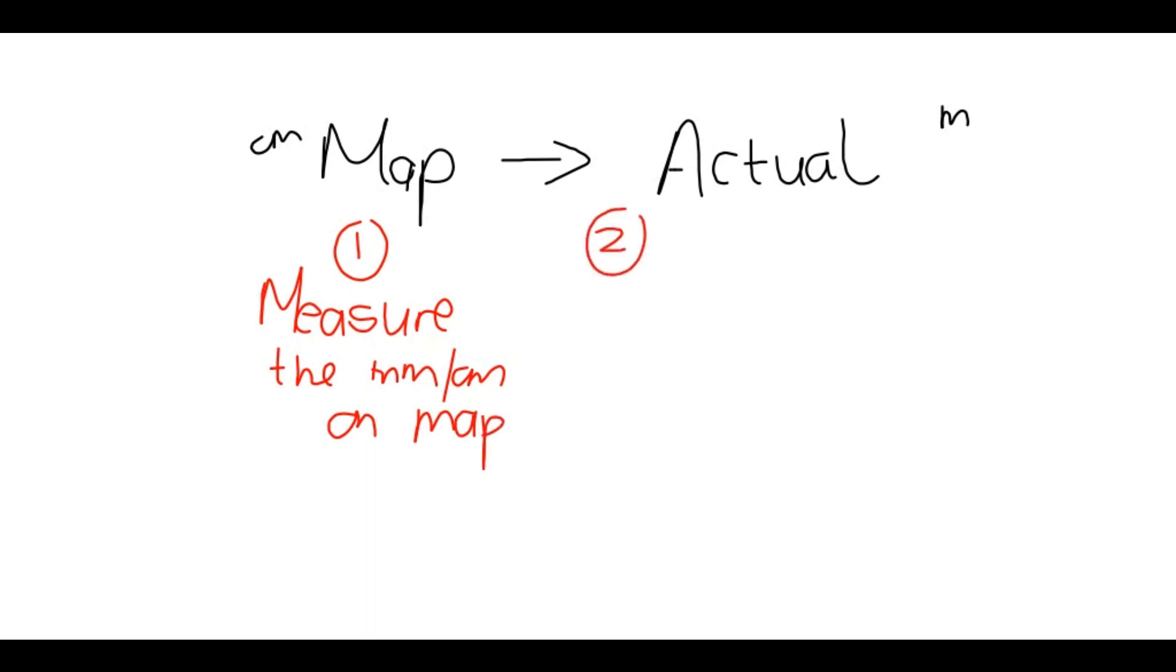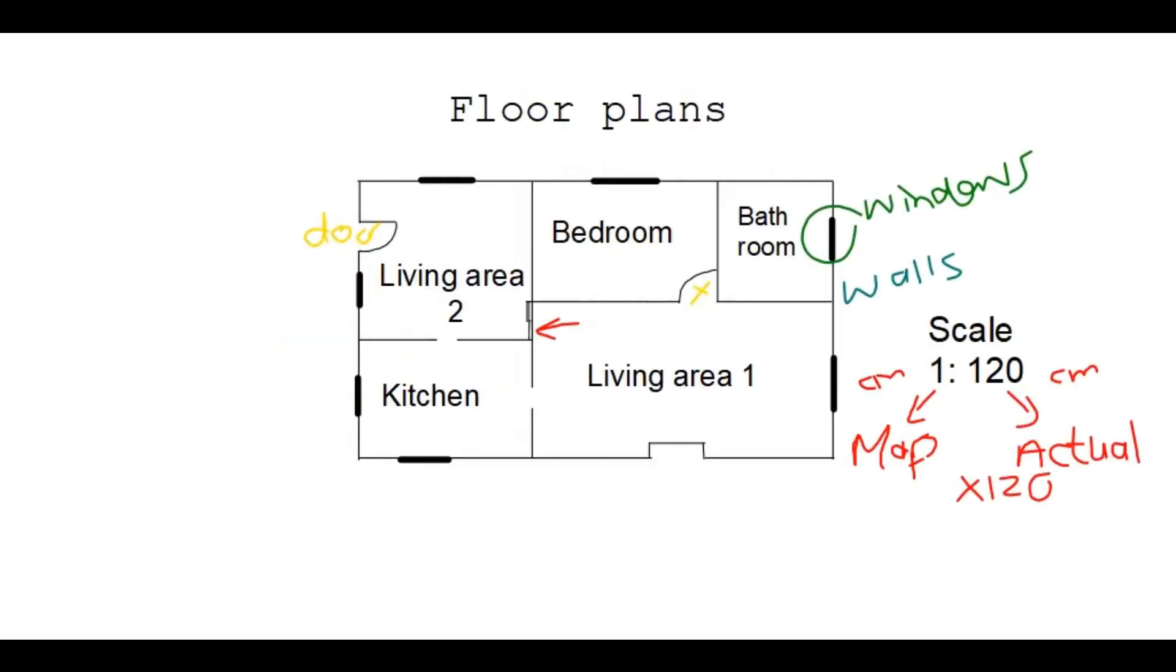Your second step would be to multiply by the scale factor. So this would be that 120 that we saw previously. In this example, 120 or whatever else number you'll find there in your example.